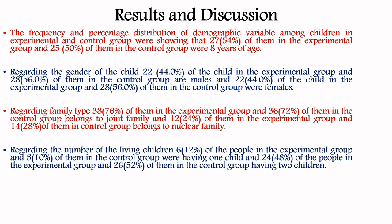The frequency and percentage distribution of demographic variables among children in experimental and control groups showed that 27 (54%) in the experimental group and 25 (50%) in the control group were 8 years of age. Regarding gender, 22 in the experimental and 28 in the control group were males, and similarly 22 in the experimental and 28 in the control group were females. Regarding family type, 38 in the experimental and 36 in the control group belonged to joint families. Regarding number of living children, 6 in the experimental and 5 in the control group had 1 child, and 24 in the experimental and 26 in the control group had 2 children.